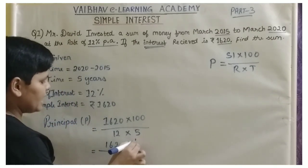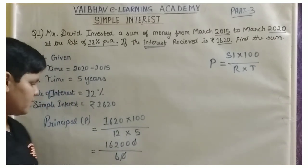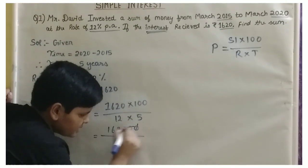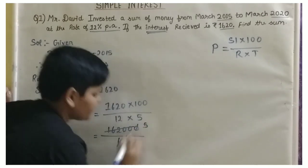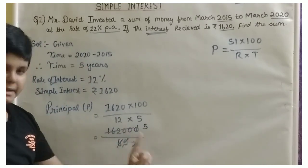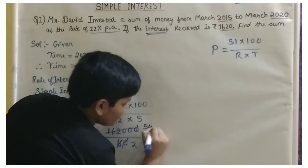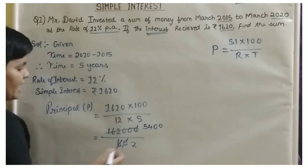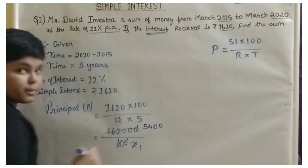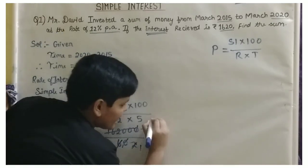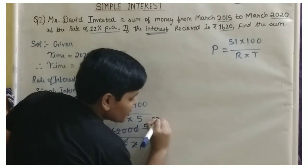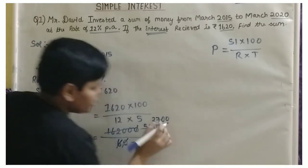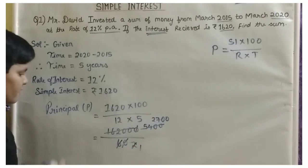The zeros cancel out. Now let us solve: dividing 1,620 by 6, using the 3 times table and 2 times table to simplify the calculation. The result is equal to 2,700.